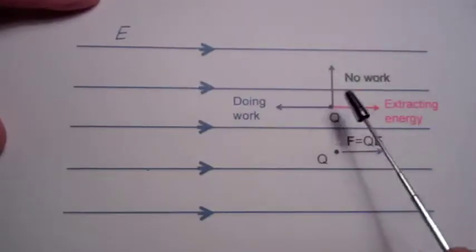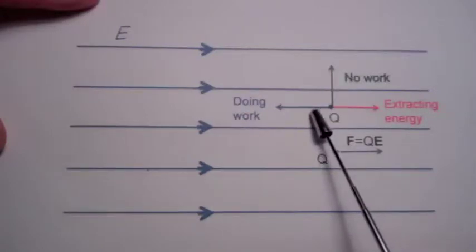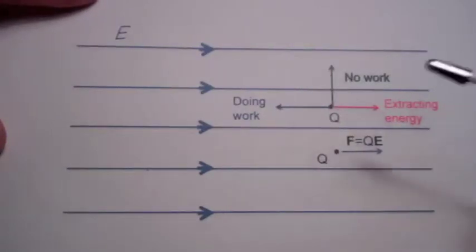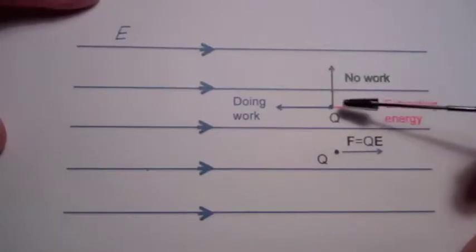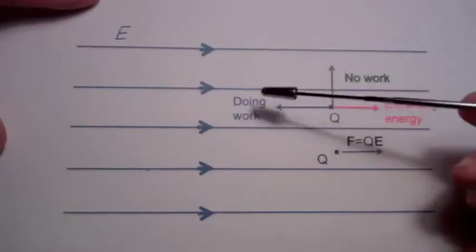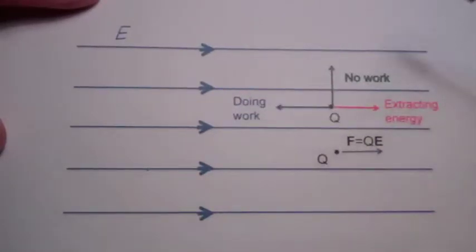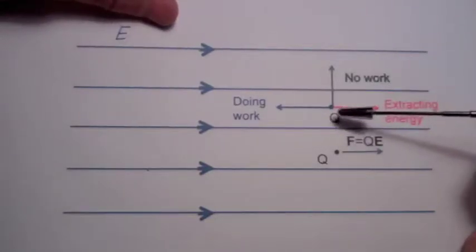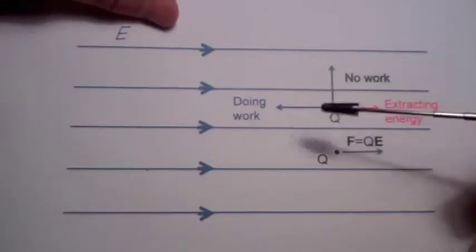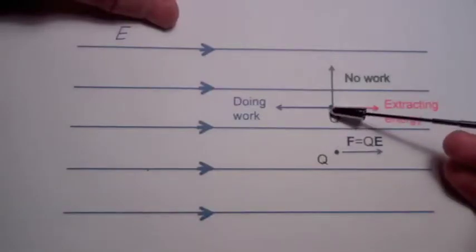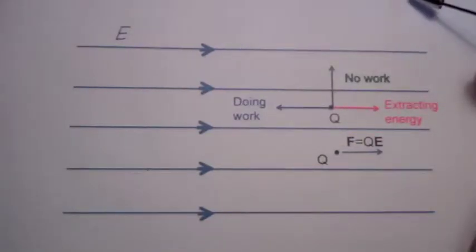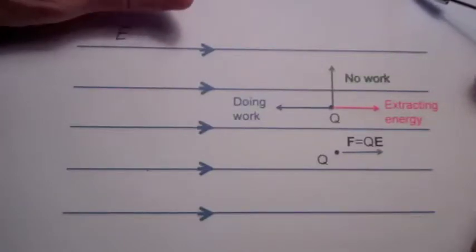Now, if we take this charge and move it as indicated by this displacement vector here, it takes a force to do that. We have to overcome the force due to the electric field, and so we are doing work, so the potential energy of that charge is increasing as we move it to the left. This would be like moving uphill and increasing gravitational potential energy.